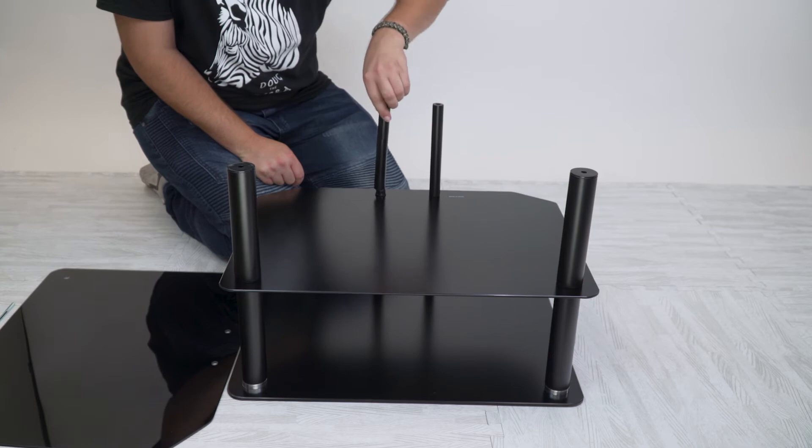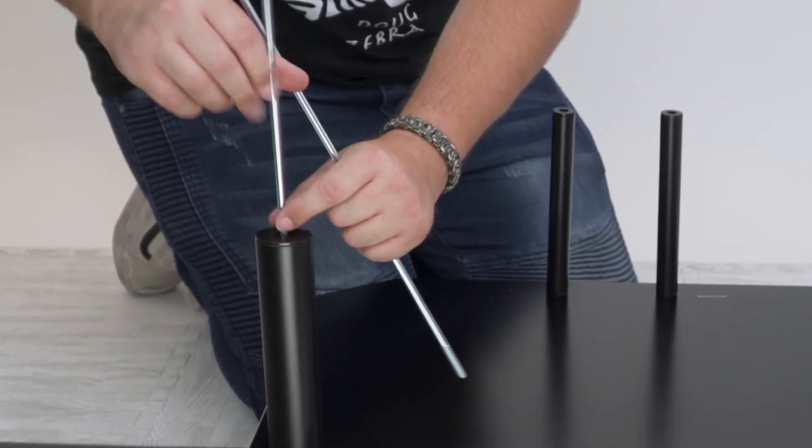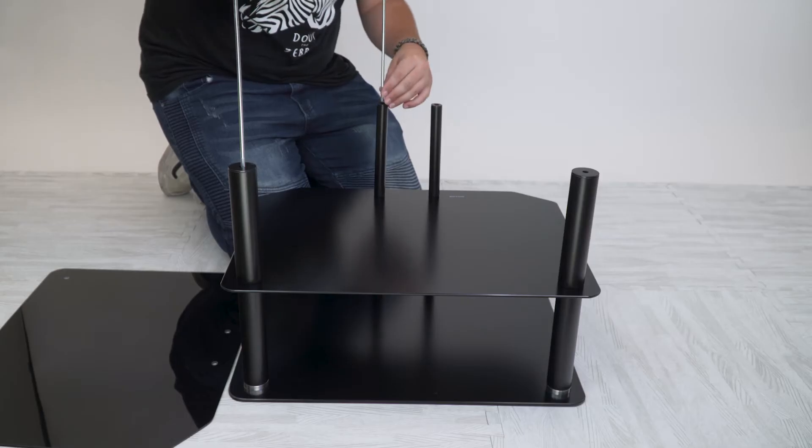And then you're going to grab the shelf piece again, shiny side down, and place it over the legs.